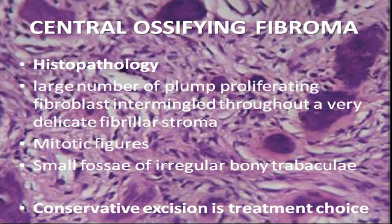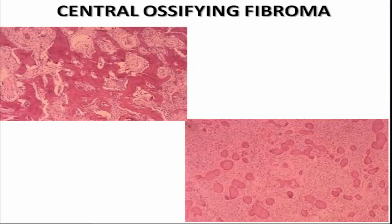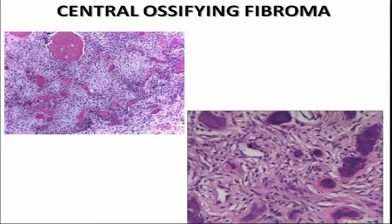Now moving towards histopathological diagrams showing central ossifying fibroma. Ossifying fibroma will show many collagen fibers and fibroblasts, and in central ossifying fibroma, you will see a greater number of mitotic figures along with calcifications — which can be dystrophic calcification, cementum formation, or bone formation. The first diagram shows bony trabeculae; the second shows globules of calcification. This diagram shows high cellularity. High power shows plump proliferating fibroblasts along with mitotic figures. Budding capillaries and small foci of calcifications are also evident. Thanks for watching.